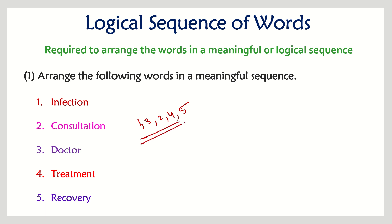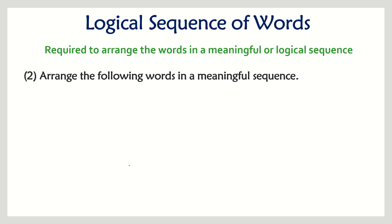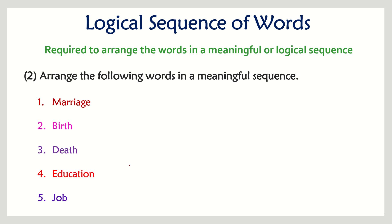Let's try the second one. The question is the same: arrange the following words in a meaningful sequence. The words are: marriage, birth, death, education, and job. Pen down what you think is the correct sequence.